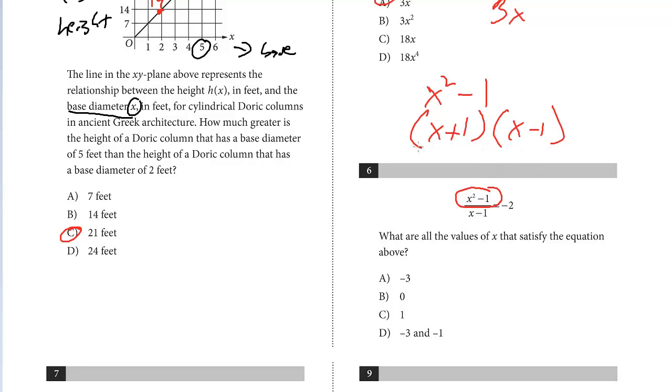If we use this for the numerator, we're just substituting. On the bottom, we have that x minus 1 equals negative 2. But now what we can do is cancel out the x minus 1. And we're just left with x plus 1 equals negative 2. We subtract 1 from both sides. We get x equals negative 3.